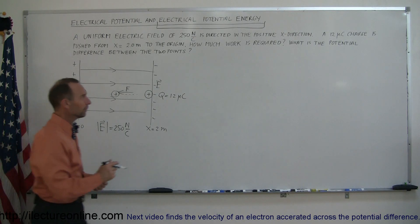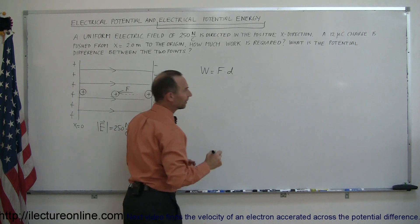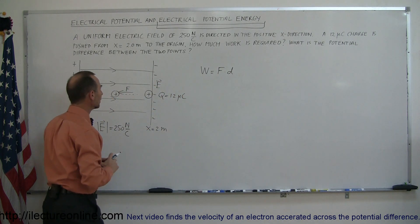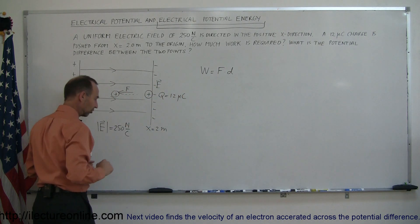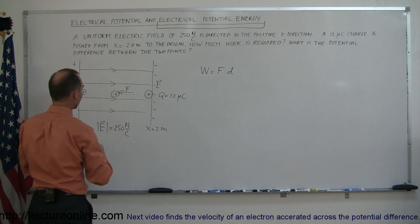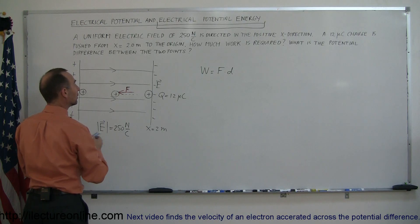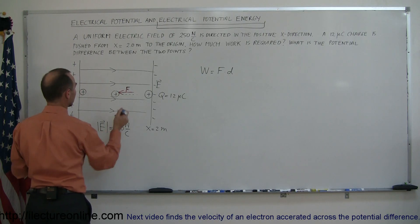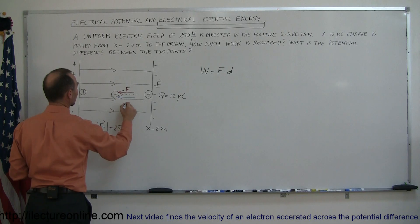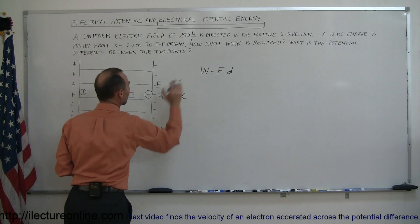The definition of work done is force times distance times the cosine of the angle between them. Now, if we're looking at this charge right here, let me get some color pens. We can see that we have a force pushing to the right like this. And the direction of motion is also in the same direction. So we're moving in the negative x direction. We're pushing in this direction. Since they're both in the same direction, the work done will be positive.